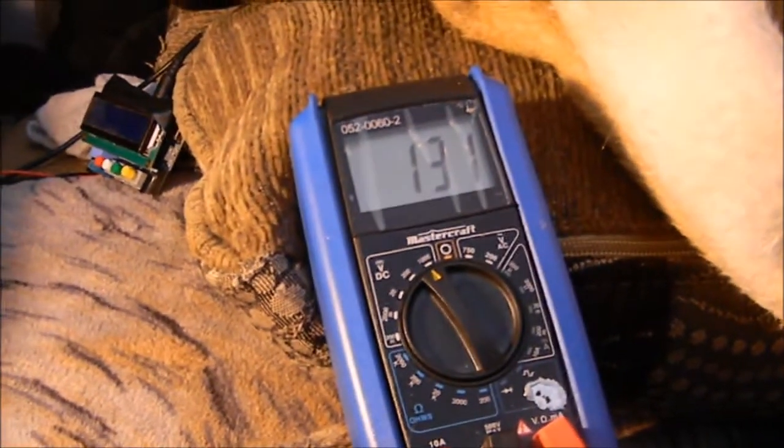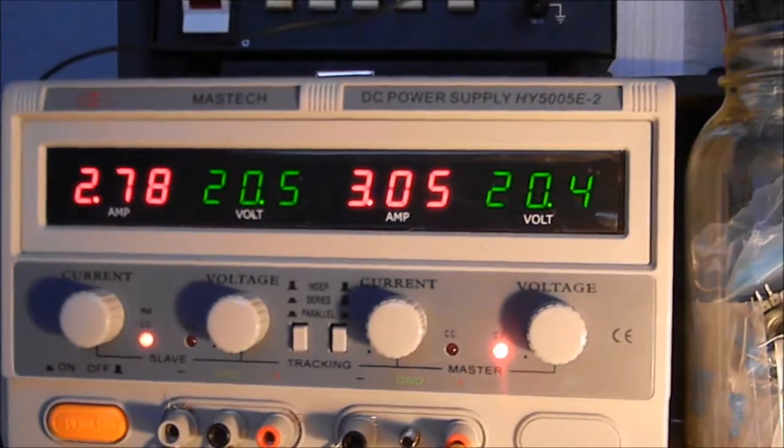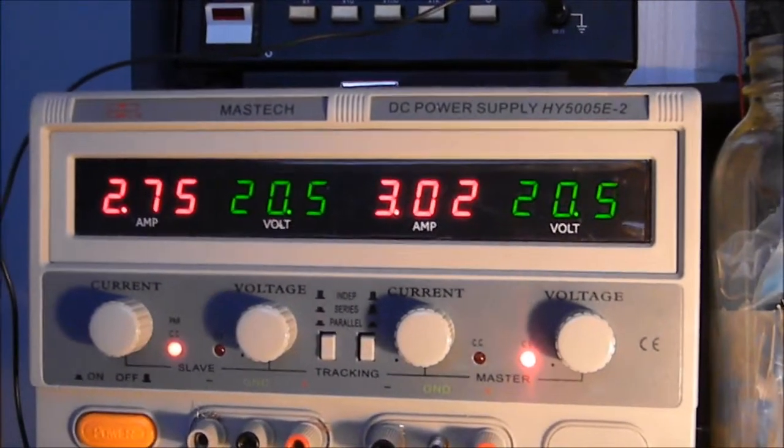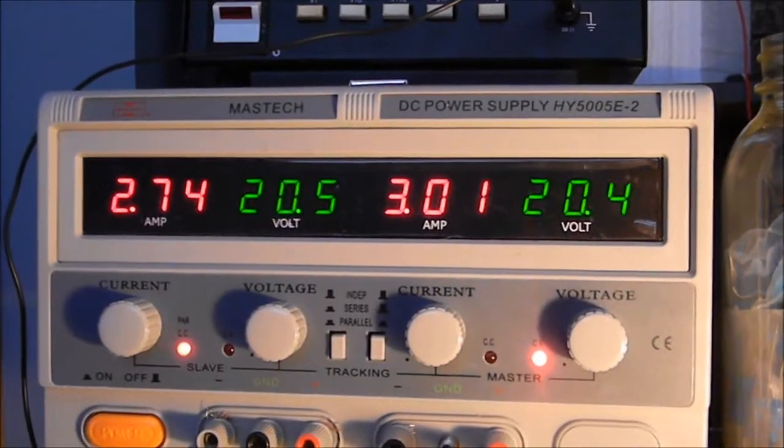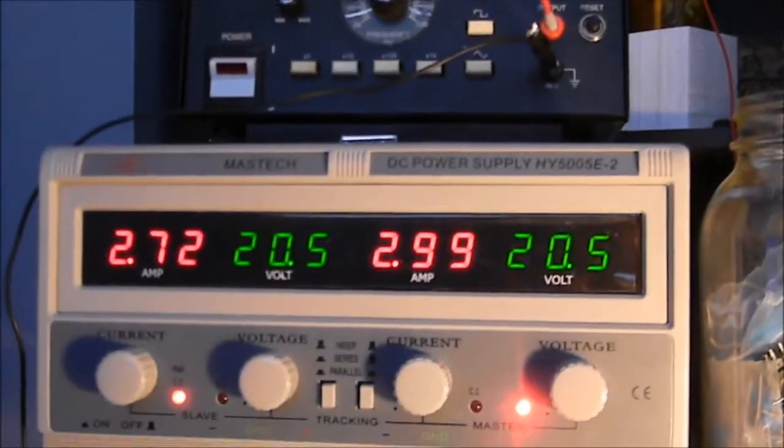Okay, now this time we have a 60 watt 130 volt bulb on the output side with the smoothing cap attached. I'm going to do the same process. All right, so we're at 130 volts and here's our numbers: 20.5 volts at those two currents, 2.75 and 3.02 added up. And now we'll crunch those numbers.